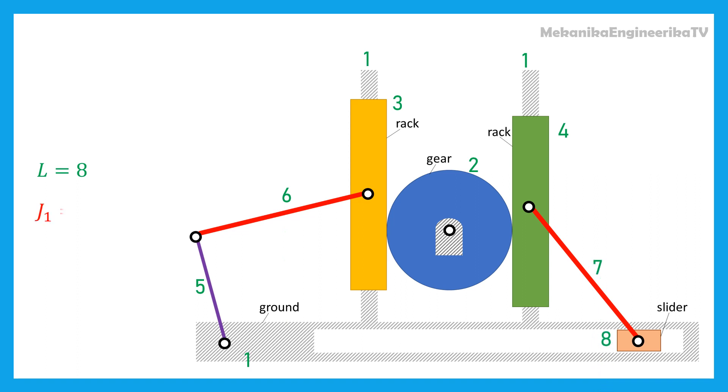There are 6 rotating or revolute kinematic pairs. There are 3 translating or prismatic kinematic pairs, as the 2 racks are translating vertically relative to the ground, and the slider is translating horizontally also relative to the ground.